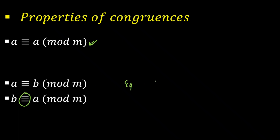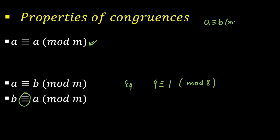For example, if I write 9 is congruent to something mod 8 — when I write mod 8, that decides the operation, meaning I'm dividing 9 by 8, and the remainder will be 1. Now, it's not like an equation — you cannot simply move 1 to the other side. Since A and B are in equivalence classes, I can write 1 is congruent to 9 mod 8, and the meaning does not change: if I divide 9 by 8, the remainder is 1.